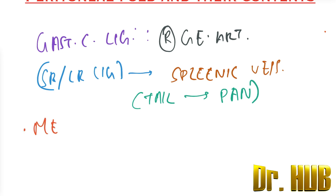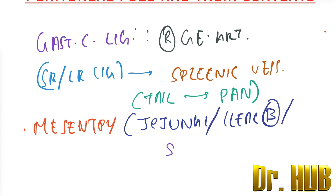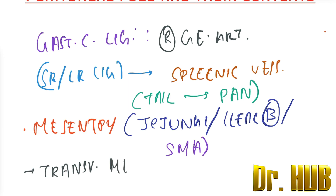Next is the mesentery, which includes the jejunum and ileal branches of the superior mesenteric artery — that is the SMA. Then there is the transverse mesocolon, which contains the middle colic vessels.